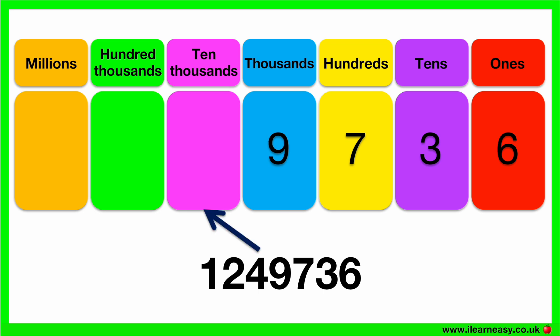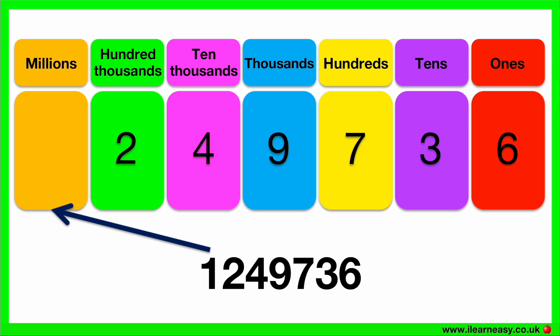The number 4 goes in the ten thousands group, the number 2 goes in the hundred thousands group, and the number 1 goes in the millions group. So this number is 1,249,736.